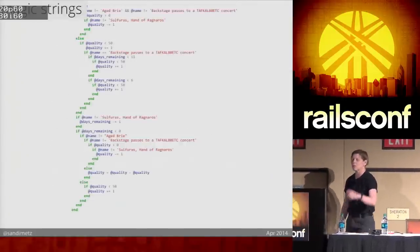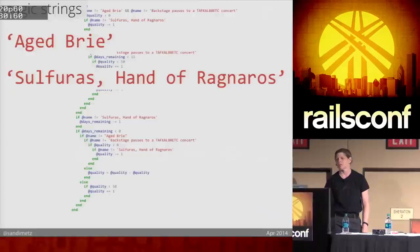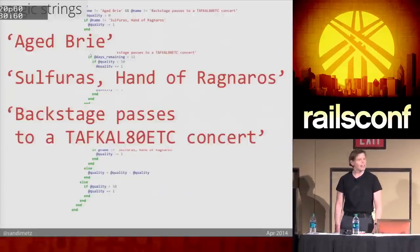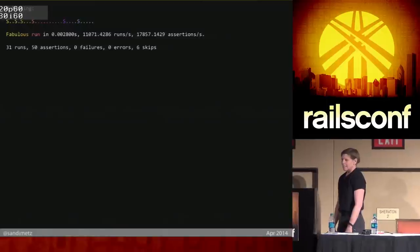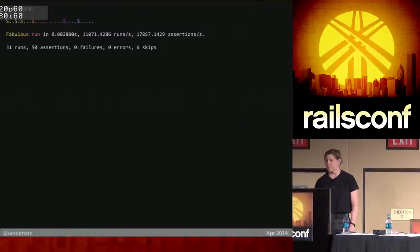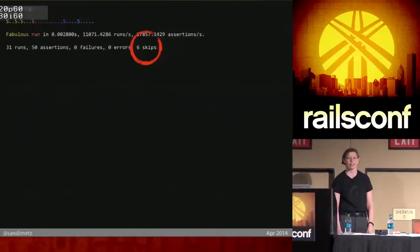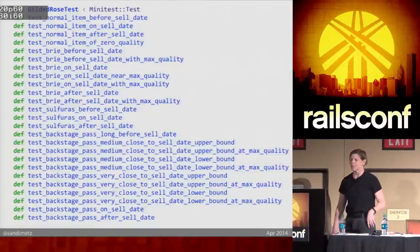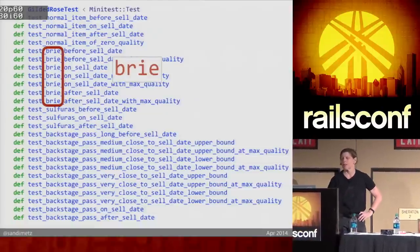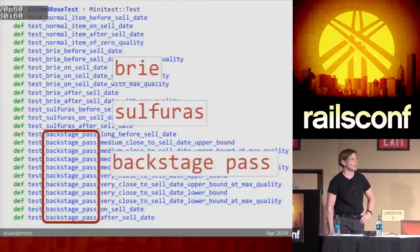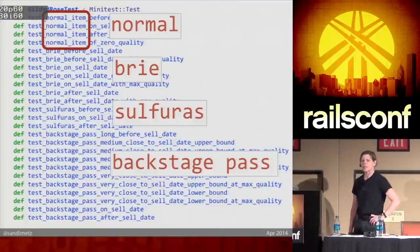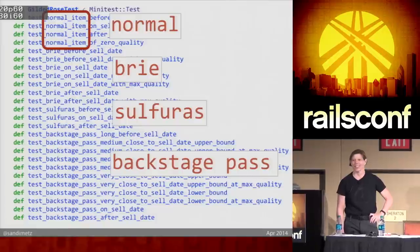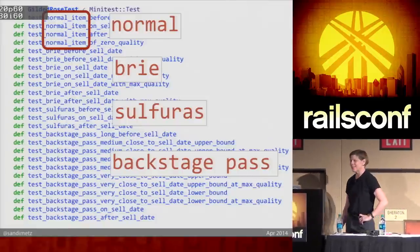At least it has tests — and they pass. There are six skip tests. The tests cluster around the magic strings, except for a set for something called 'normal,' which is never mentioned in the if statement. I suspect there's something in an else branch somewhere that matters. Looking at a test, they all look just like this: given a Gilded Rose that has this name, quality, and days remaining, when I tick, quality goes down by one and days remaining goes down by one. It's as if I'm selling milk or eggs — something with a sell-by date.